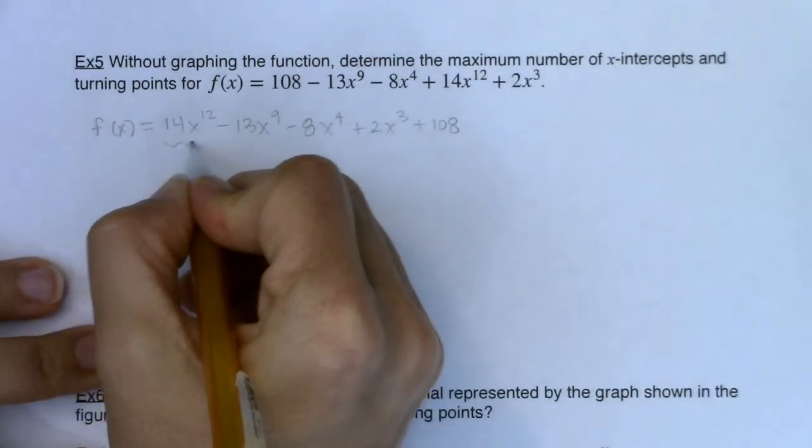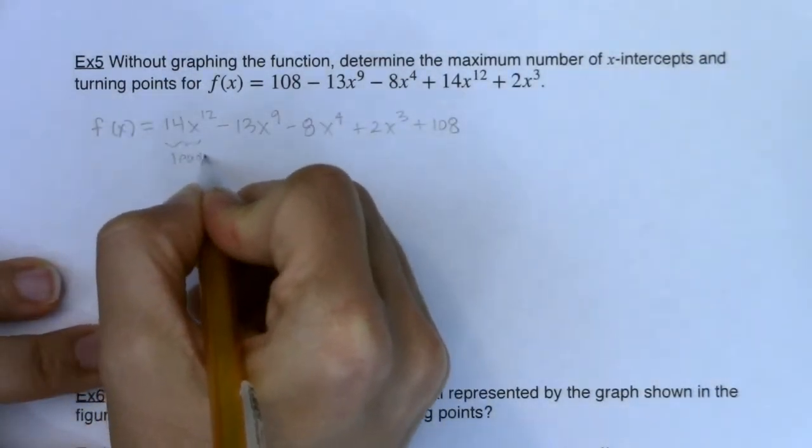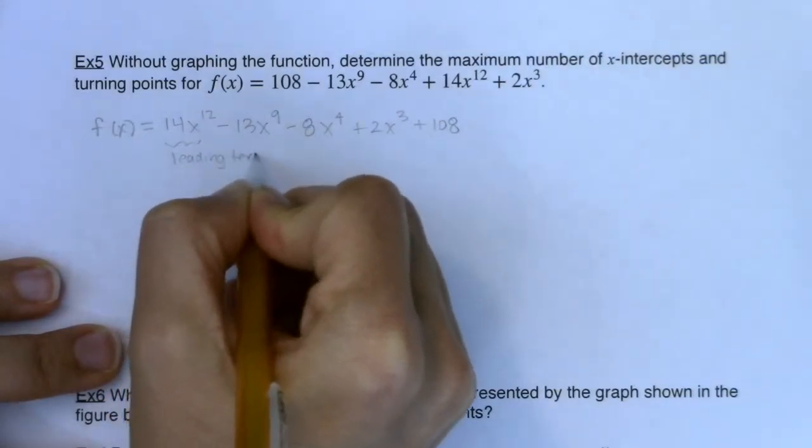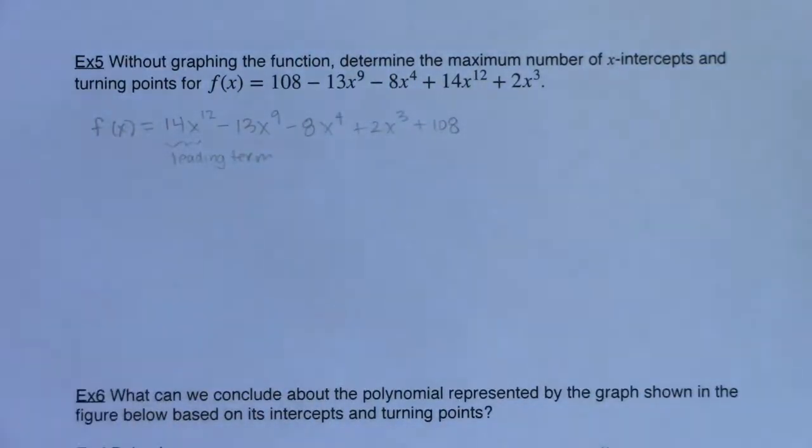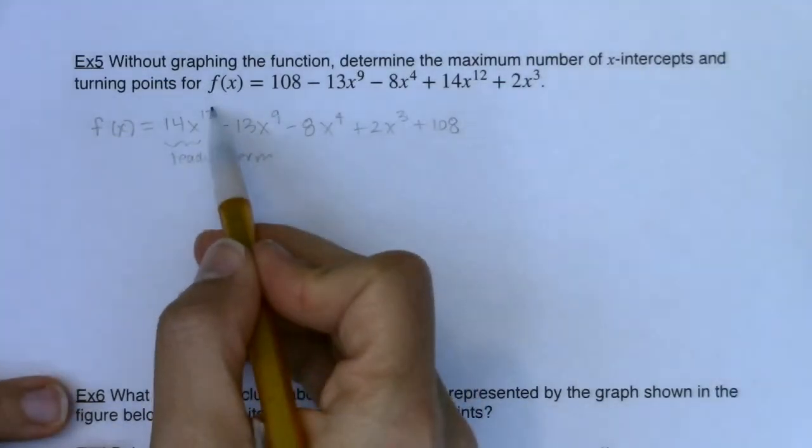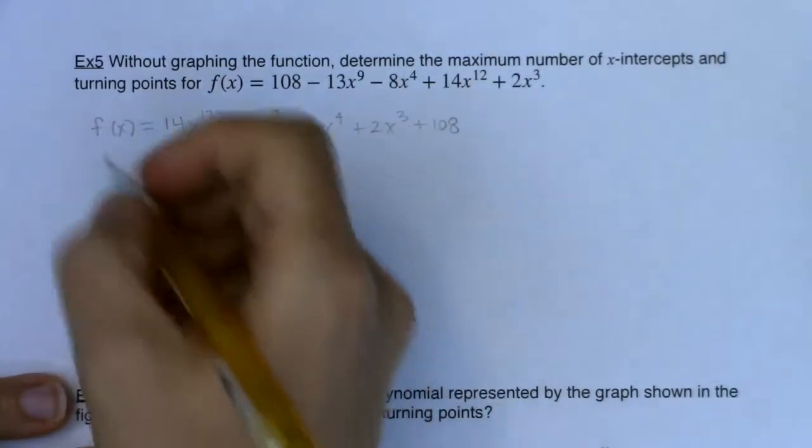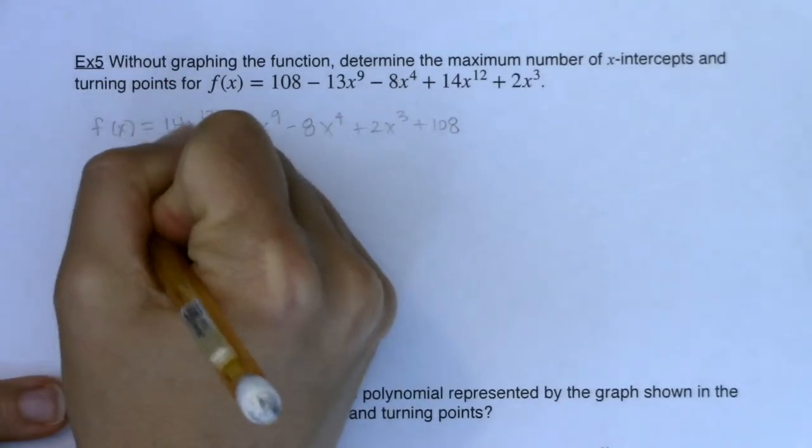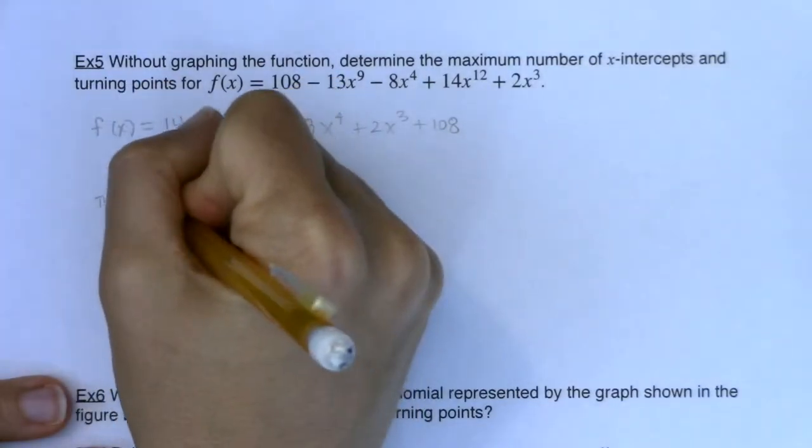So here is my leading term, and that's the term that's going to drive all of my analysis. All right, so if I look at this, this leading term has a degree 12. So this is a degree 12 polynomial.